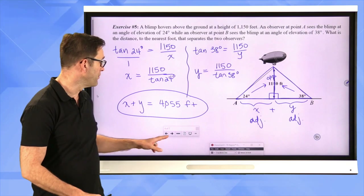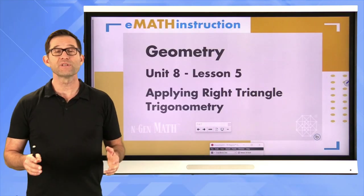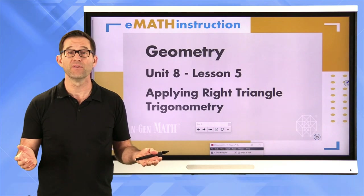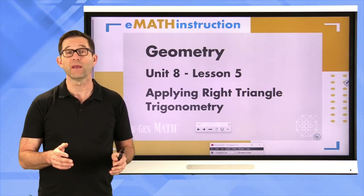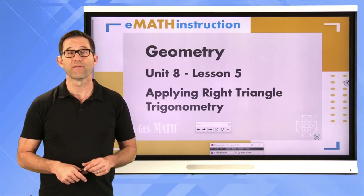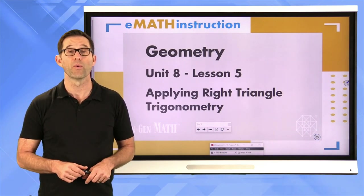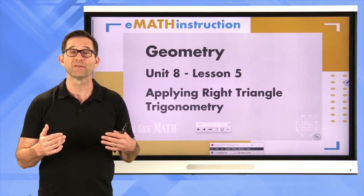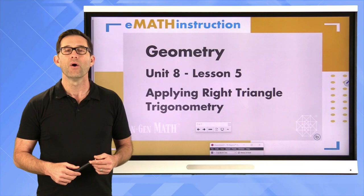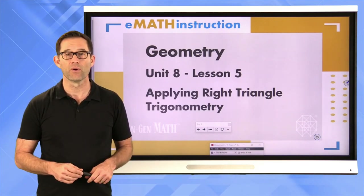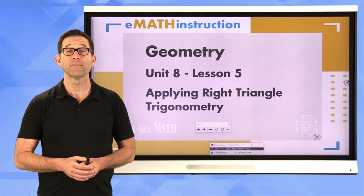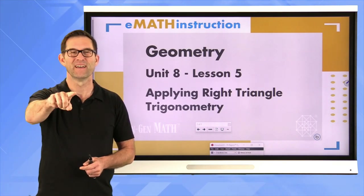Today we spent our first of two days on applying right triangle trigonometry. We saw a variety of problems that really boiled down to using a trig ratio to either solve for a missing angle of a right triangle or a missing side of a right triangle. The key takeaway is getting more practice on those two fundamental skills while seeing where and how right triangle trigonometry gets applied in the real world. Thank you for joining me for another geometry lesson by eMath Instruction. My name is Kirk Weiler — keep thinking and keep solving problems.